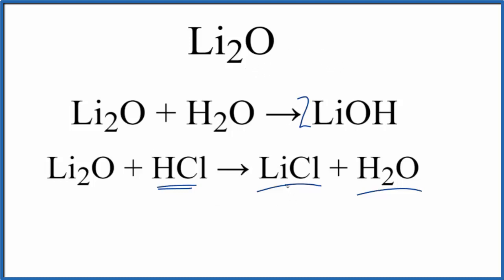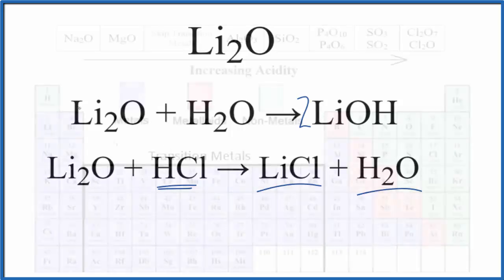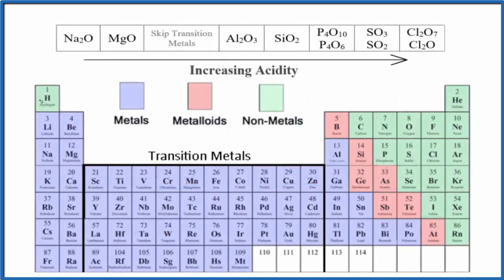Let's take a look at some trends for oxides on the periodic table. We're going to look at period three on the periodic table here. The trend is, on this side we have these basic metal oxides. We go across and we get to the nonmetal oxides. They're more acidic.